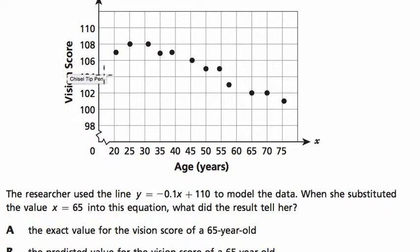We've got age versus vision score, and these points must be the people that showed up. For example, at 65 years, this person scored 102, right? So that's the data we have.